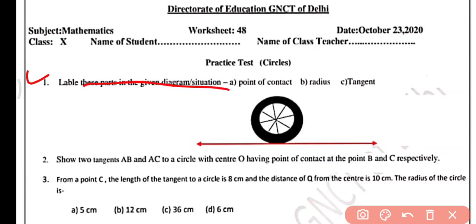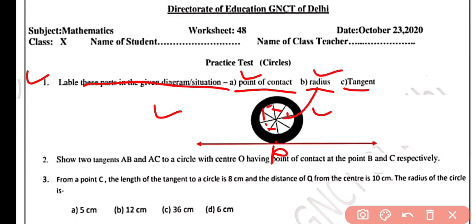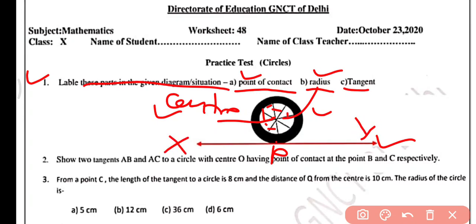We need to label the point of contact, radius, and tangent. We are given a figure of a wheel with a horizontal surface. The wheel and the horizontal have a common point P, which is the point of contact. The radii of the wheel are labeled, with the center marked. The line XY that touches the circle at point of contact P is known as the tangent.